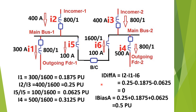For zone A, i_diff_A = i2 − i1 − i6 = 0.25 − 0.1875 − 0.0625 = 0. The bias current for zone A = i1 + i2 + i6 = 0.1875 + 0.25 + 0.0625 = 0.5 pu.